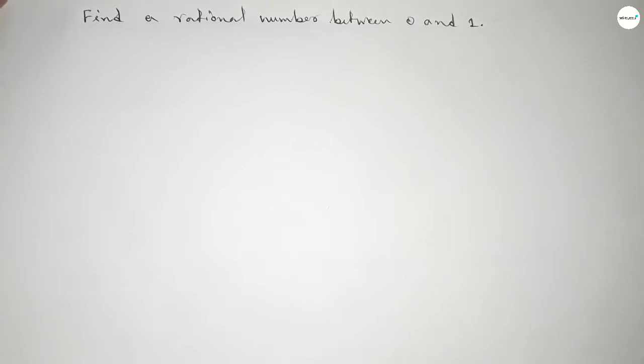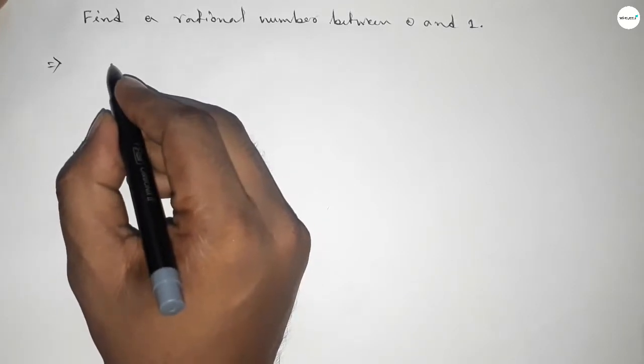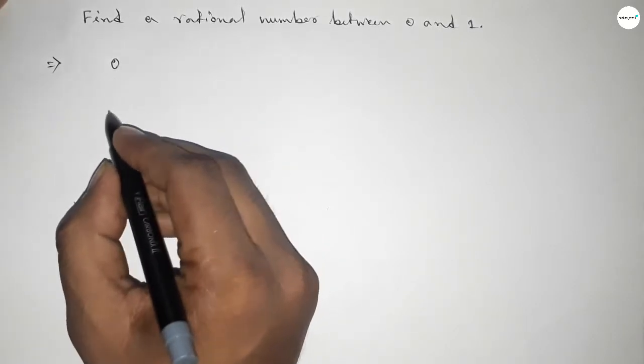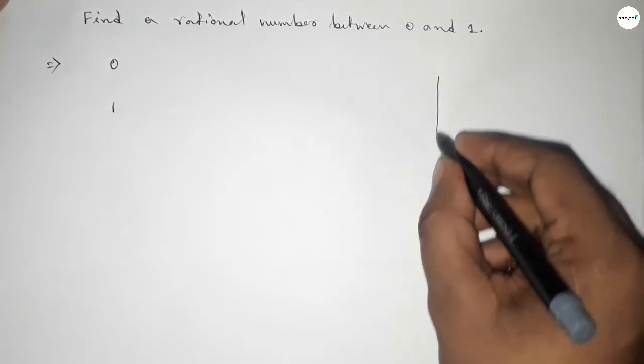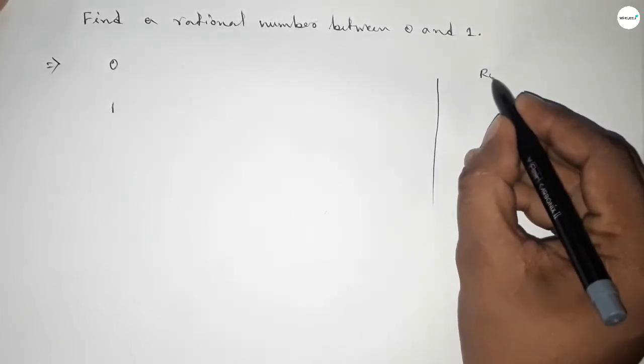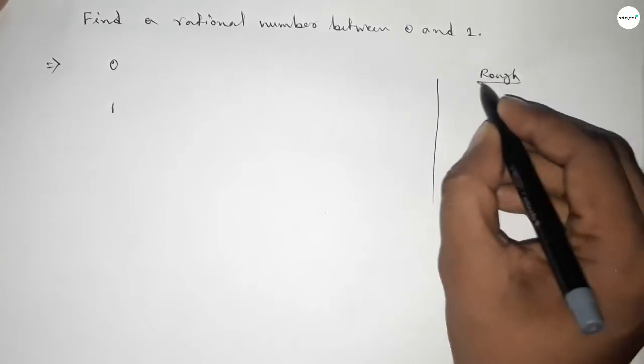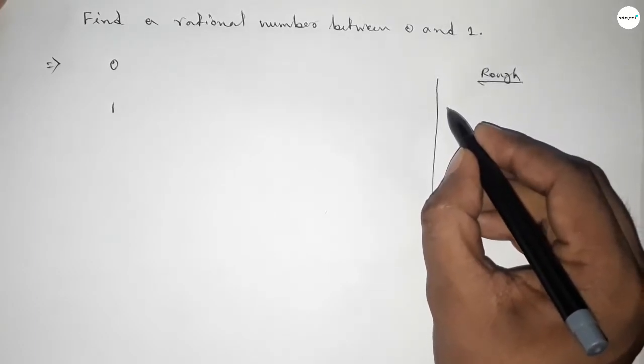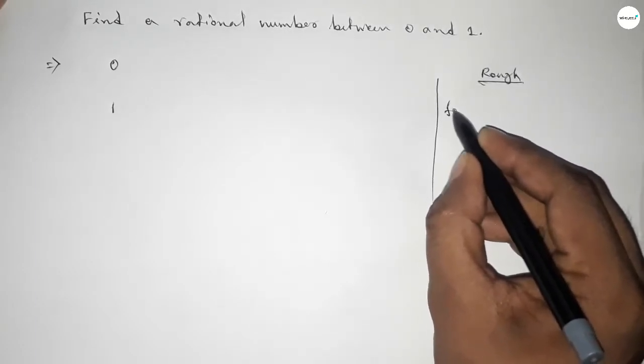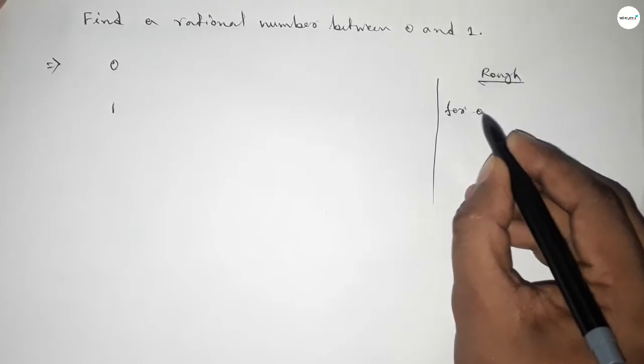First of all, write down here the given numbers 0 and 1 by this way. Now, roughly discussing some calculation here. For finding one rational number between any two numbers, we have to follow this method.